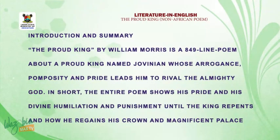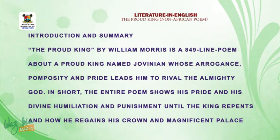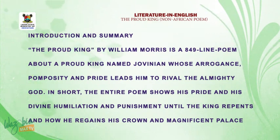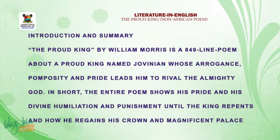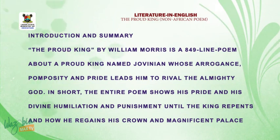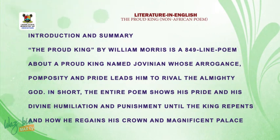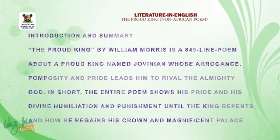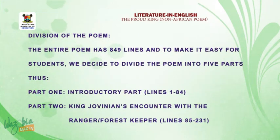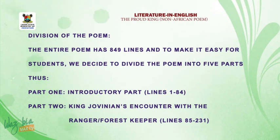We want to consider the introduction and summary of the poem. The Proud King by William Morris is an 849-line-long poem about a proud king named Jovnian, whose arrogance, pomposity, and pride lead him to rival the Almighty God. To make the poem easy, I have divided it into five parts.